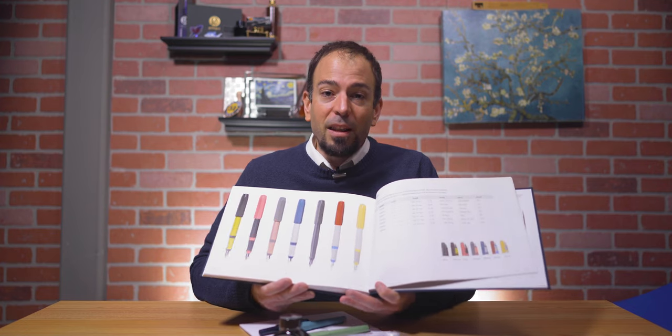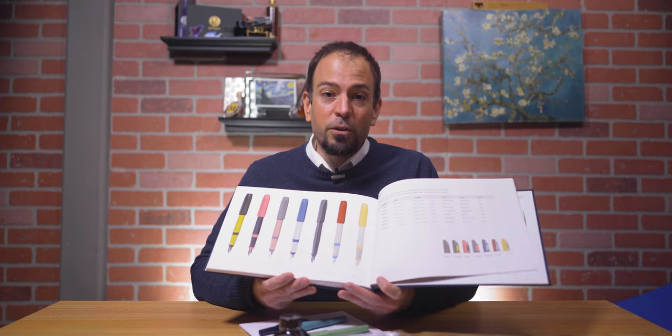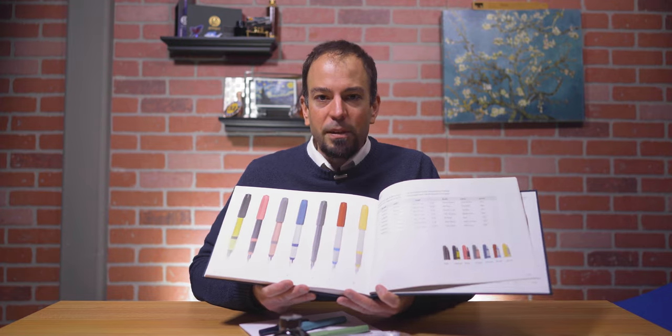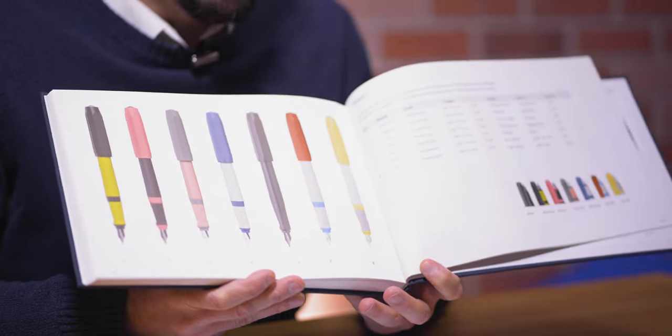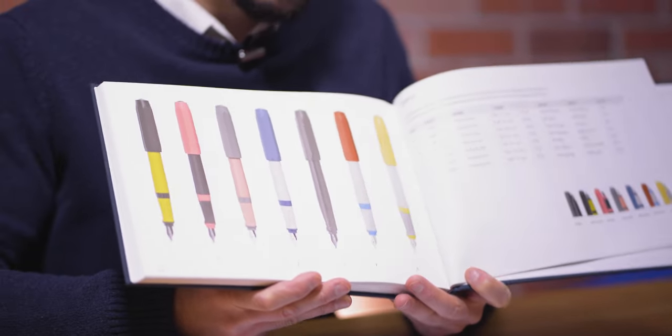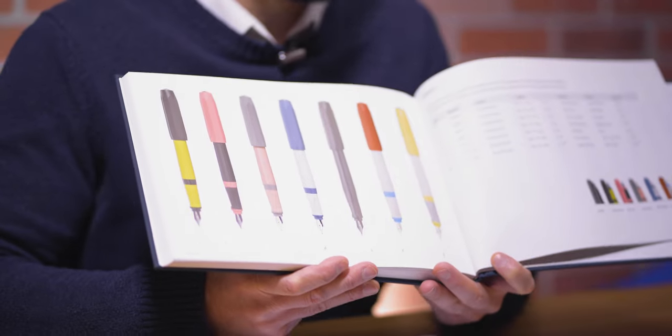The Kaweco Perkeo has a lightweight injection molded resin construction. It's clipless, has a faceted cap that's an octagonal faceted cap, and the tapered barrel is a hexadecagonal cap. Say that three times.